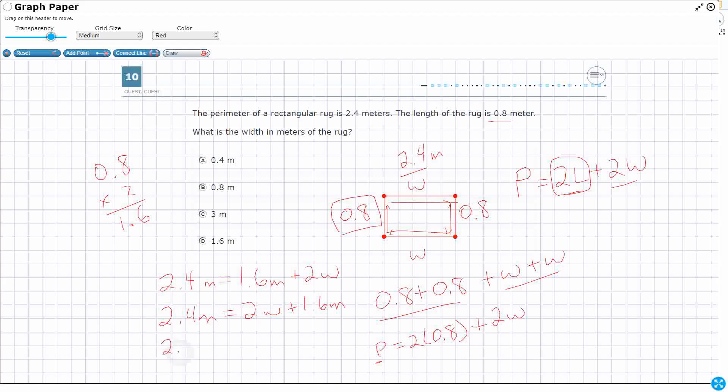As long as our biggest number is up front, we can say 2.4M minus 2W equals 1.6M, or we can say 2.4M minus 1.6M equals 2W. This is the one I'm looking for.